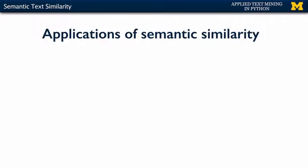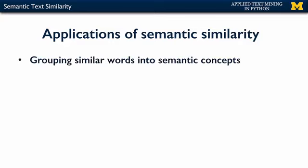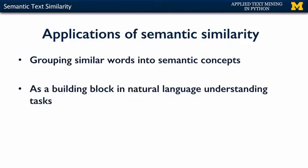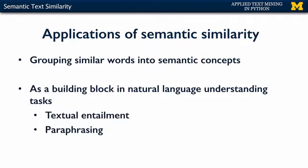To help us with that, we could use some semantic similarity resources. But first, let's see what the applications of semantic similarity are. Semantic similarity is useful when you're grouping similar words into semantic concepts — into concepts that have the same meaning. It is also very useful as a building block in natural language understanding tasks, such as textual entailment or paraphrasing. Paraphrasing is a task where you rephrase or rewrite a sentence into another sentence that has the same meaning.